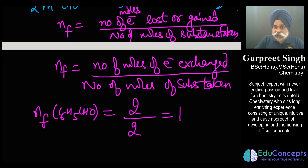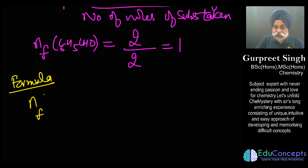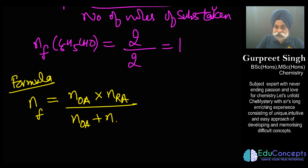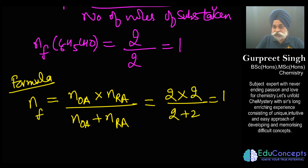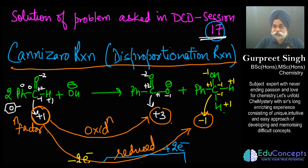Another way to find the n-factor for a disproportionation reaction uses the formula: n-factor equals (n-factor as reducing agent × n-factor as oxidizing agent) divided by the sum of the two. Here that is (2 × 2) / (2 + 2) = 1. So the overall n-factor of benzaldehyde in the Cannizzaro reaction is 1. The Cannizzaro reaction is a disproportionation reaction. Thanks, have a nice day, stay safe!